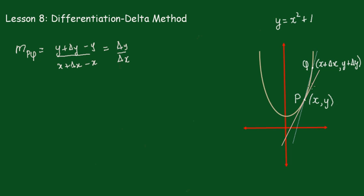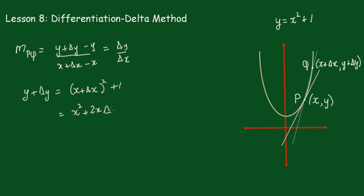As P moves to Q there is a change in x and a change in y. Because the point (x + Δx, y + Δy) lies on this particular function, we replace y with y + Δy, so that y + Δy equals (x + Δx)² + 1. Removing the brackets gives us x² + 2x·Δx + Δx² + 1.